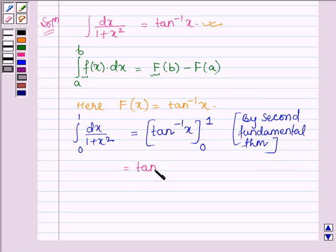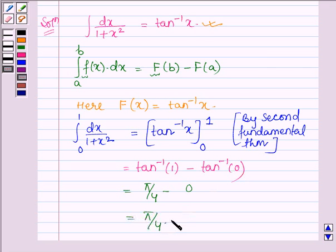This is equal to tan inverse 1 minus tan inverse 0. So tan inverse 1 is pi by 4, and tan inverse 0 is 0. So this gives pi by 4.